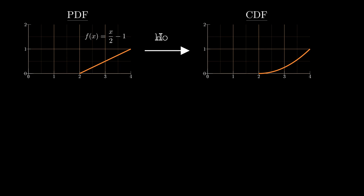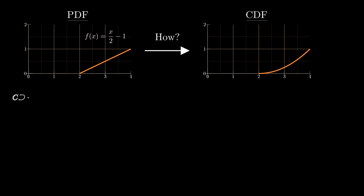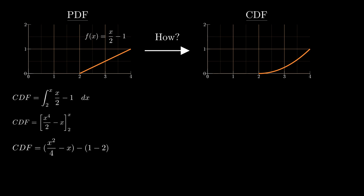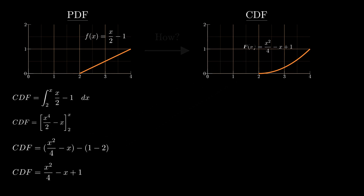You could ask how you establish this relationship, and my answer would be that we utilize the fundamental theorem of calculus. You find the cumulative distribution function by taking the integral where the lower bound is 2 — the start of your PDF — and the upper bound is x. The reason you do this is that substituting x as your upper bound, via the fundamental theorem of calculus, supplies a function for your final result.